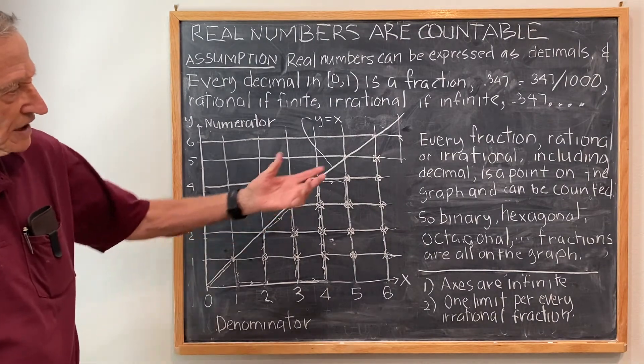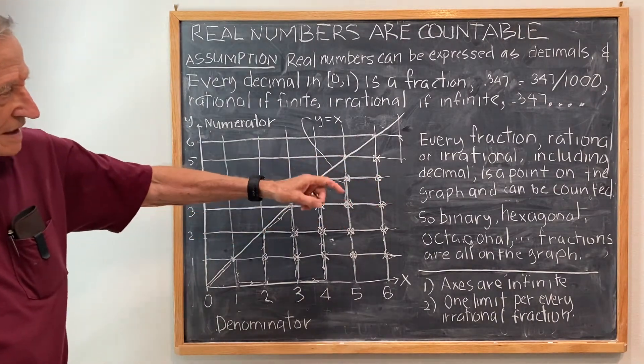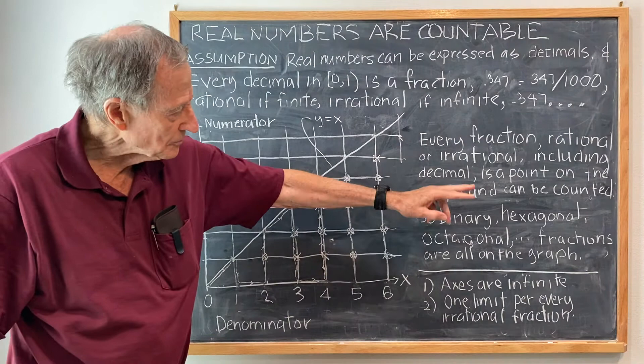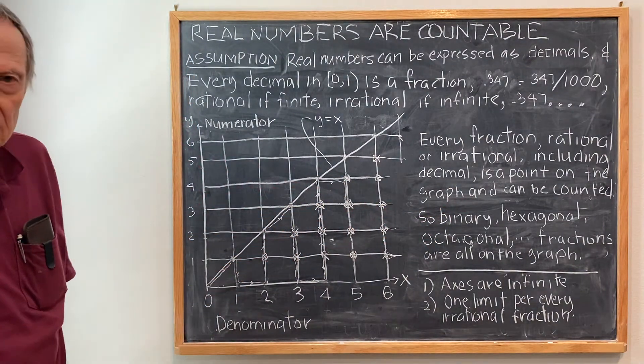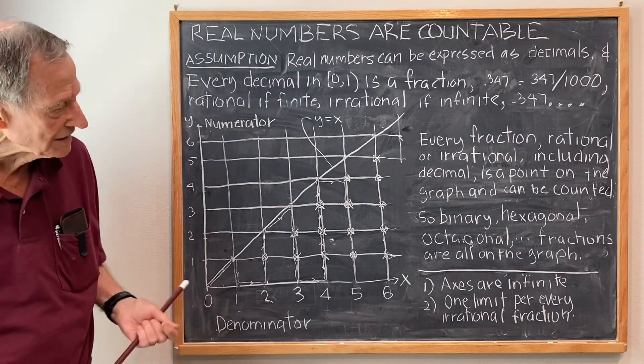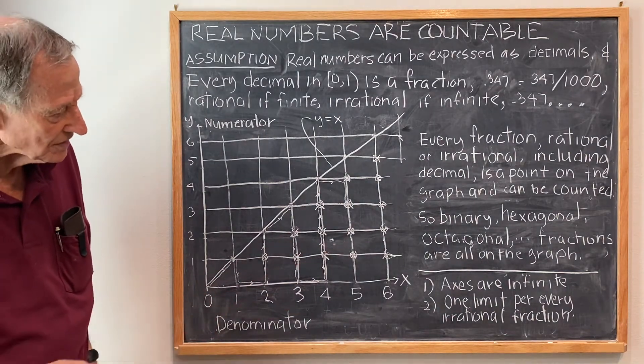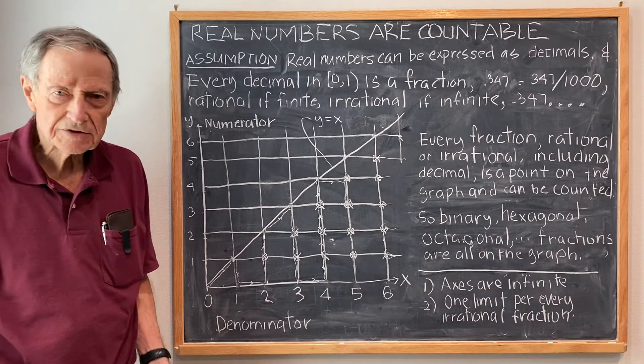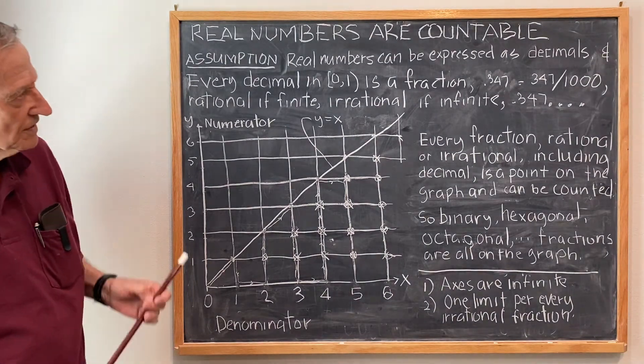Now, every fraction, rational or irrational, including decimal, is a point on the graph and therefore can be counted. So, binary, hexagonal, octagonal, etc. fractions are all on the graph and therefore can all be counted.